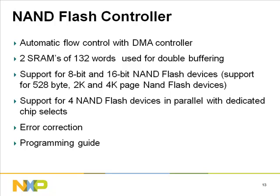Key features of the NAND flash controller: automatic flow control with DMA controller, two SRAMs of 132 words used for double buffering, support for 8-bit and 16-bit NAND flash devices, support for 528-byte, 2K, and 4K page devices. Large page support is achieved by organizing large pages into multiple small sub-pages. Supports 4 NAND flash devices in parallel with dedicated chip selects. Error correction ECC5 and ECC8 are available.